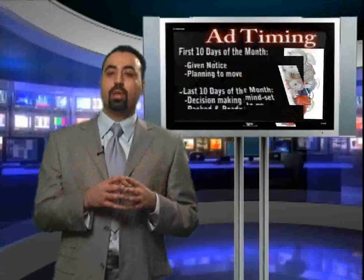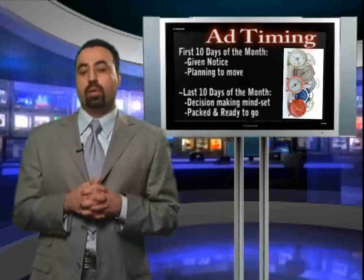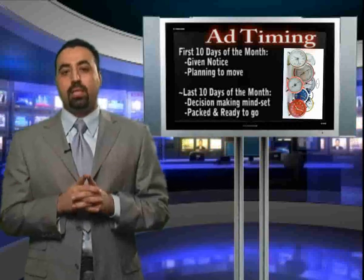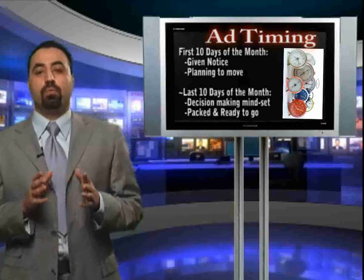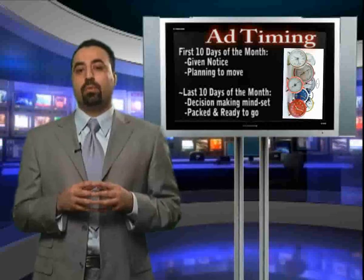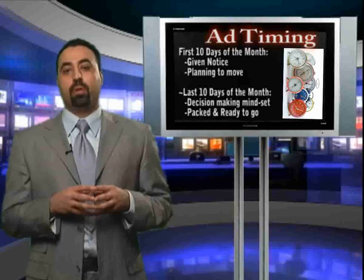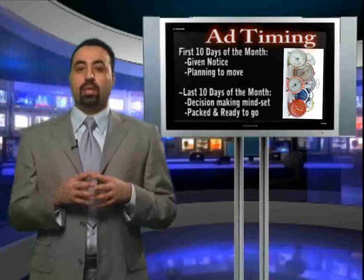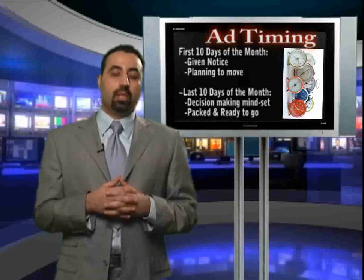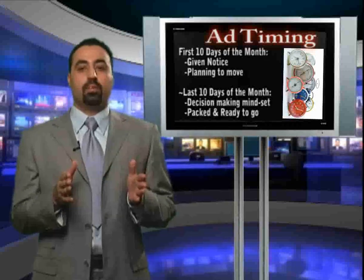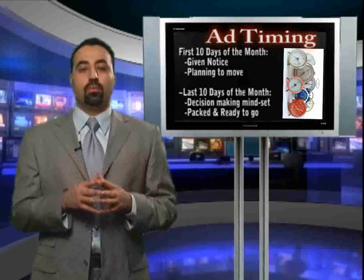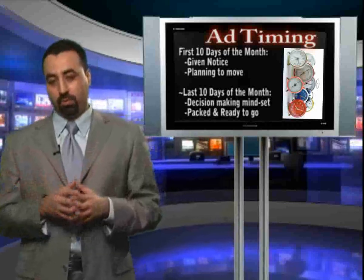In terms of timing, if you're advertising in a local paper, keep in mind that timing is everything. The first 10 days of any month is the most effective time to advertise, because this is the time that renters have given their notices and are planning to move. The second best timing is the end of the month — the last 10 days — because some renters were looking for properties and were not able to find one, so they're ready to pack up and move into your place.